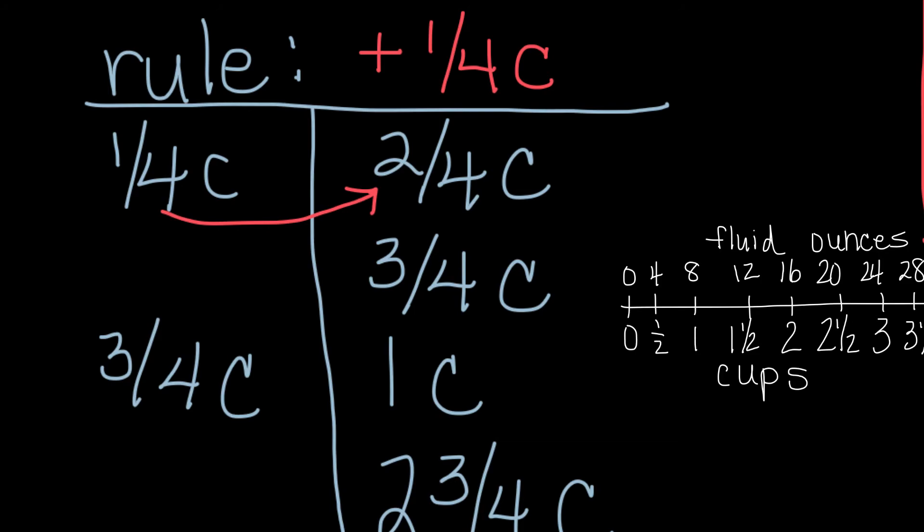So if I have three-fourths over here, what am I going to do to figure out this number? Am I going to add or subtract? Hopefully you figured out that you're going to subtract. So if we take three-fourths minus one-fourth in this instance, then we would get two-fourths over here.